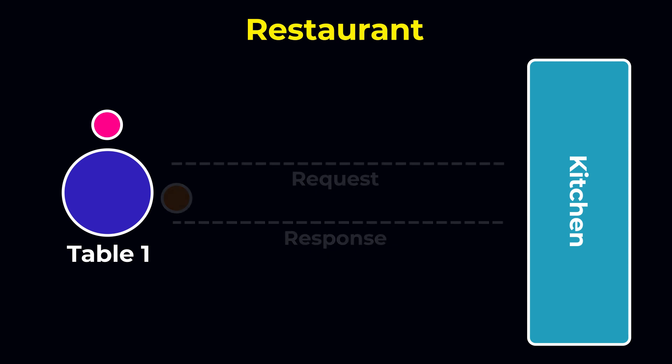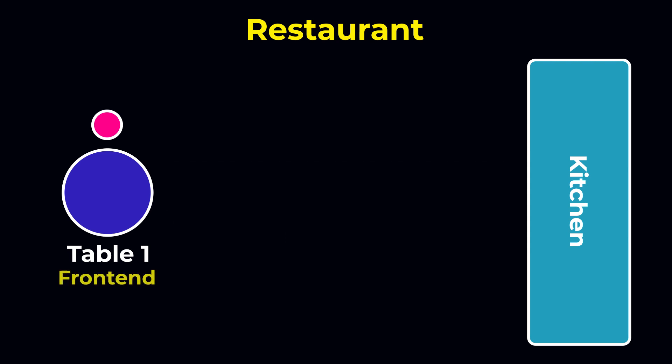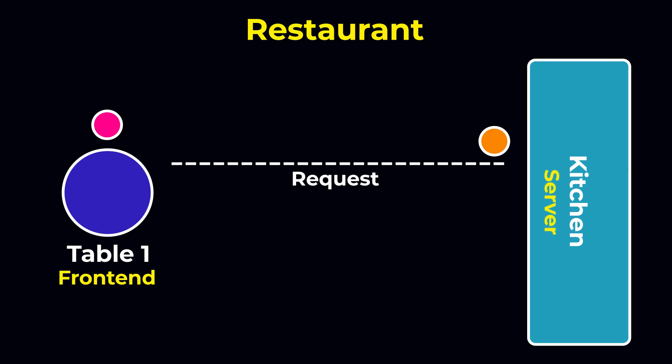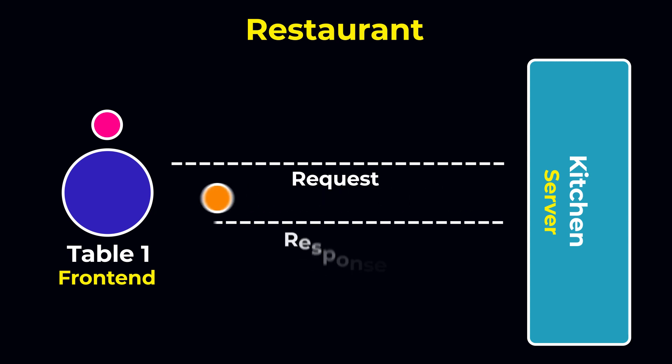So table 1, where we are sitting, is our application frontend — basically what we see on our browser. Now suppose we want to get some data about clothes. We will call the API, which is our waiter, and send a request to it. The API will transfer that request to the server or database, which is our kitchen, and that server or database will return the response — the data we want — and the API delivers that response data to our frontend.